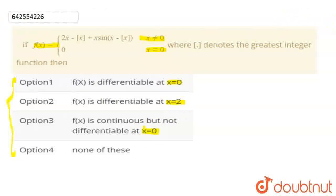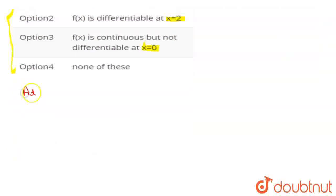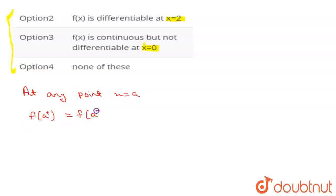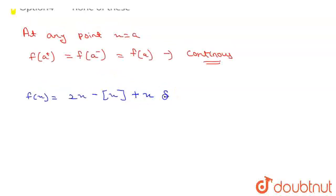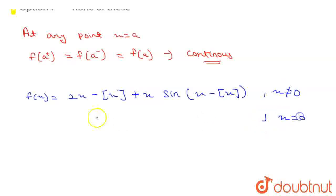First of all, we know that at any point x equal to a, if f(a+) equals f(a−) equals f(a), then we can say that the function is continuous. If this is not satisfied, then the function is discontinuous. We have given a function f which equals 2x minus the greatest integer function of x, plus x times sin of x minus the greatest integer function of x, when x not equal to 0, and when x equal to 0 this is equal to 0.